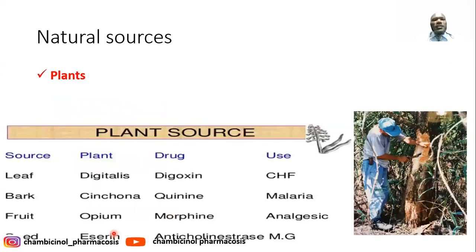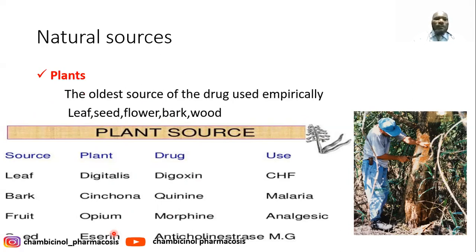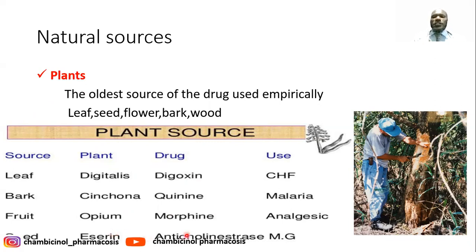Most drugs were originally obtained from plants, including digoxin — obtained from the digitalis plant, specifically the leaf — which is used for congestive heart failure. Also, quinine, used as an antimalarial, is obtained from various Cinchona species, especially the bark.